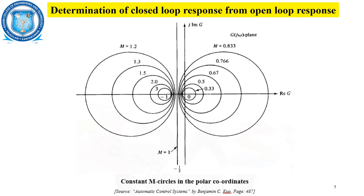This is a perfect circle equation with center at (M² / (1 − M²), 0) and radius M / (1 − M²). By substituting M = 1, we get a straight line. The straight line is obtained for M = 1, and on both the right and left hand sides we can see circles of different radii.